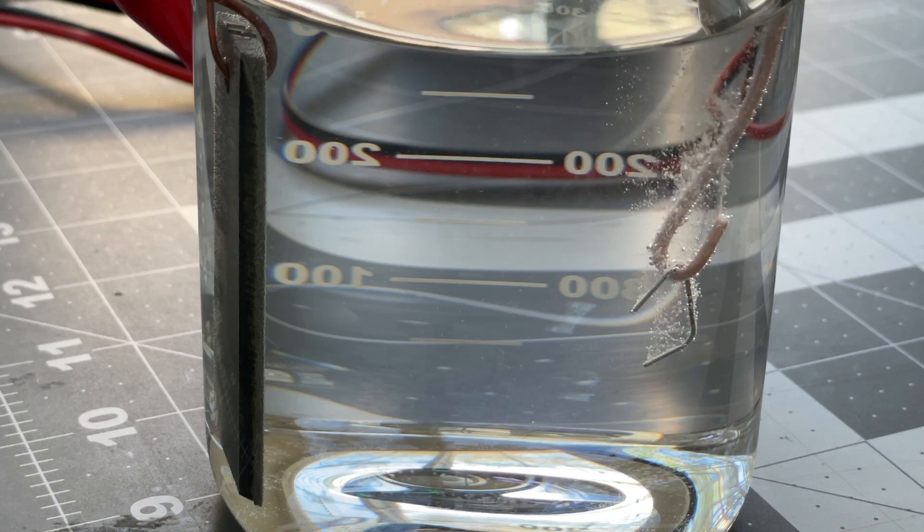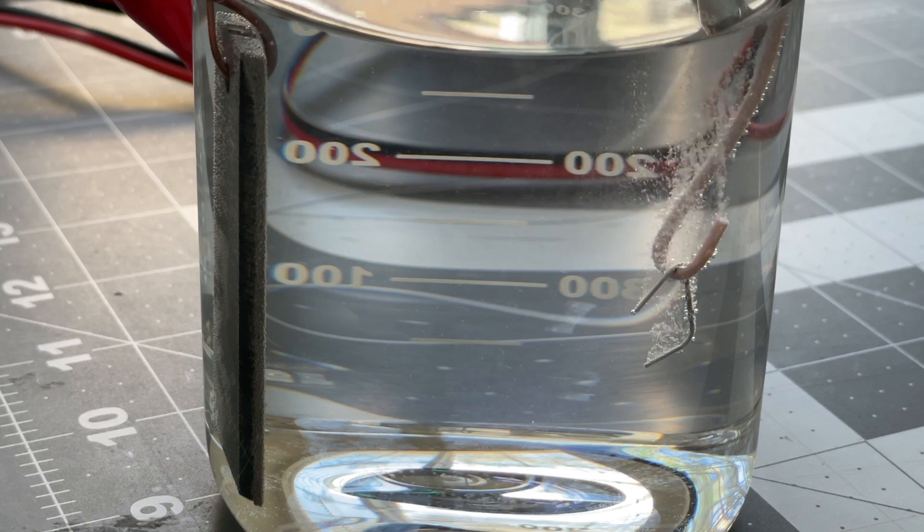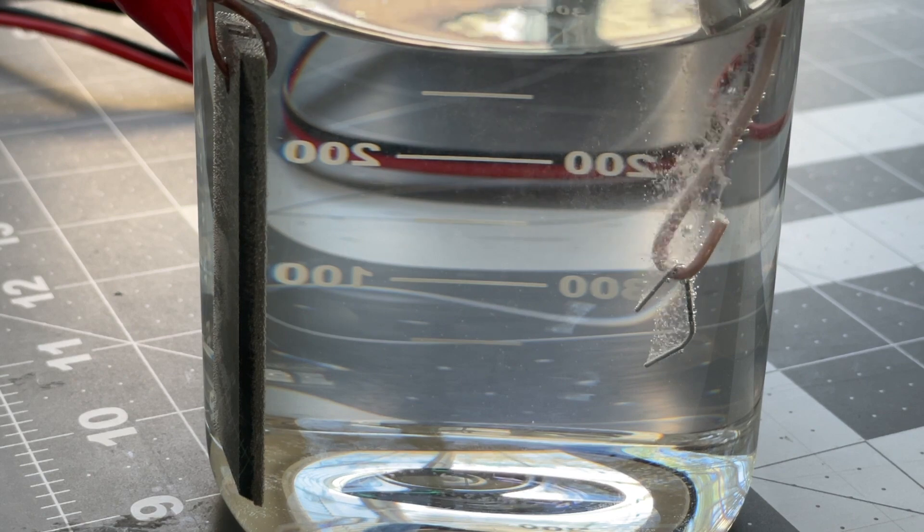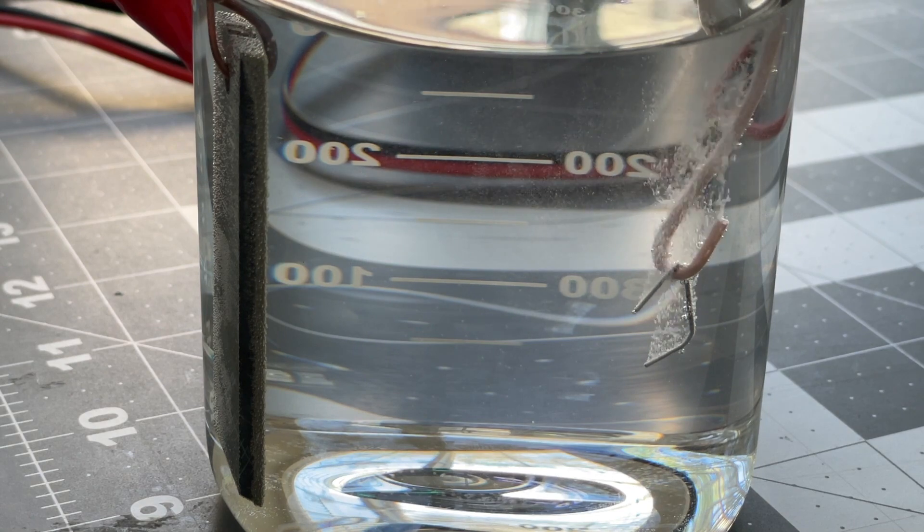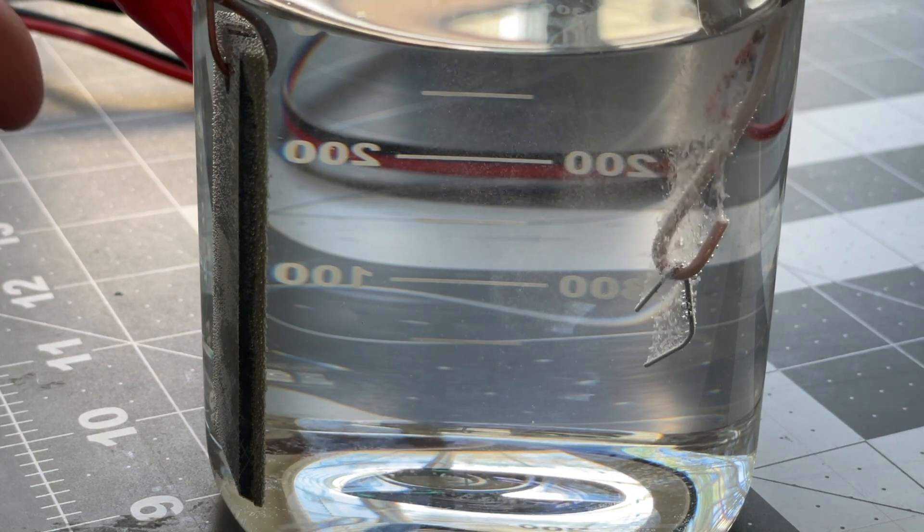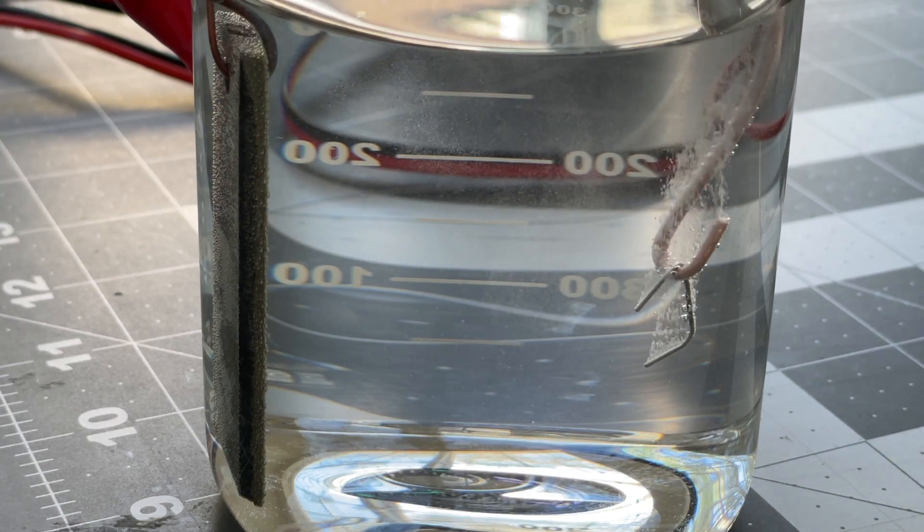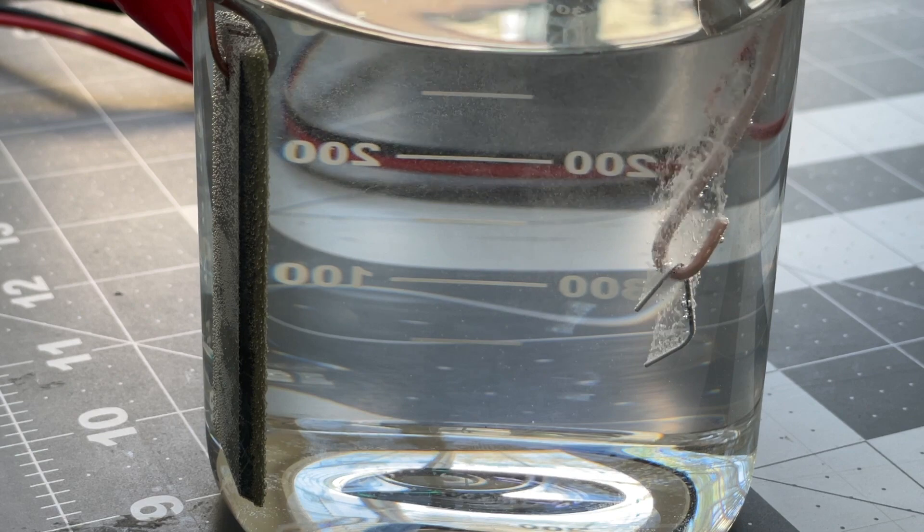What is happening is the rust is coming off. We're going to leave it in here for about an hour. And that should basically convert any remaining rust off of the staple. It will transmit over to the other side here and we'll show you the results.